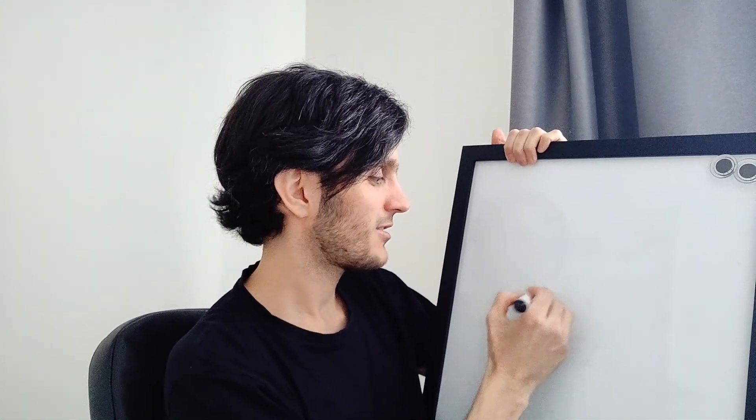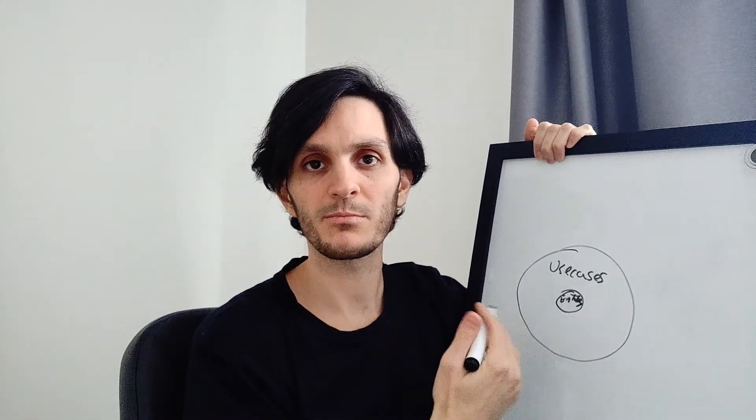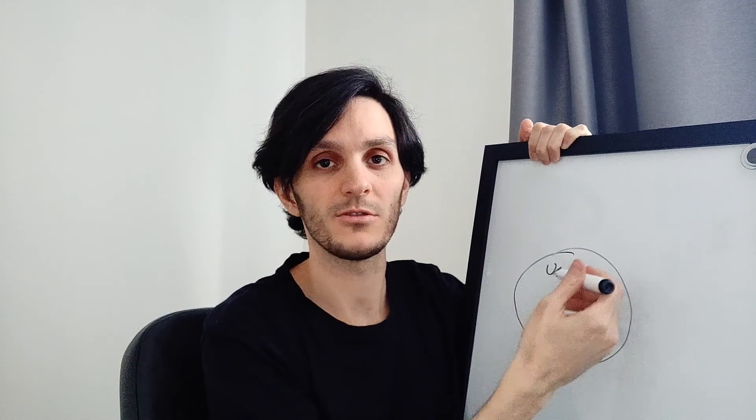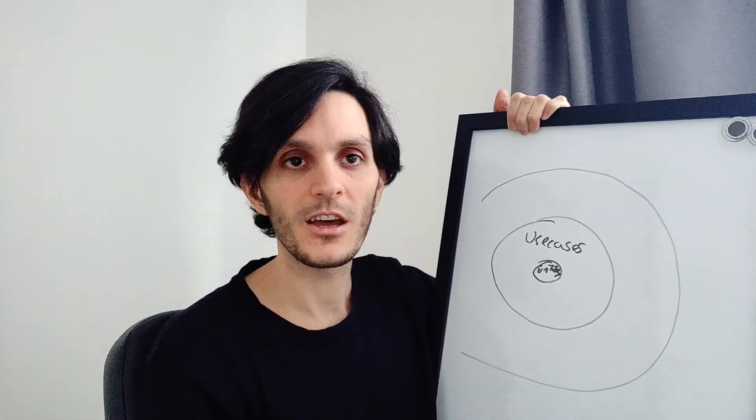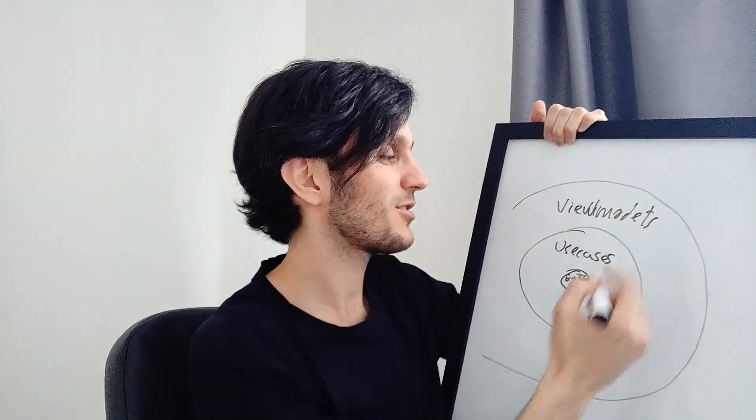If you try to find online what clean architecture looks like, you will always find the Uncle Bob diagram. I'll take my board here to explain it. It's an onion diagram — at the very center you have the entities, which is basically the raw data coming from the API or blockchain. Then you have another layer with the use cases, which represent the intent of what you want to do with your data. Then you have another layer covering view controllers, view models, and presenters.